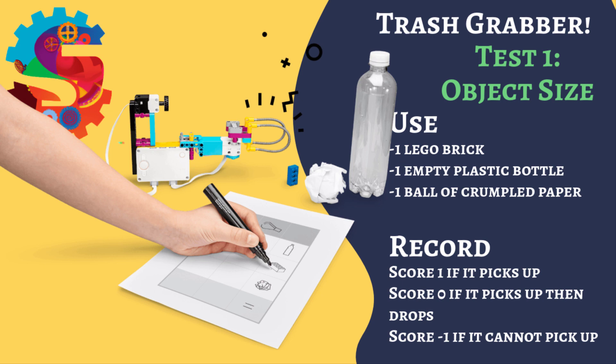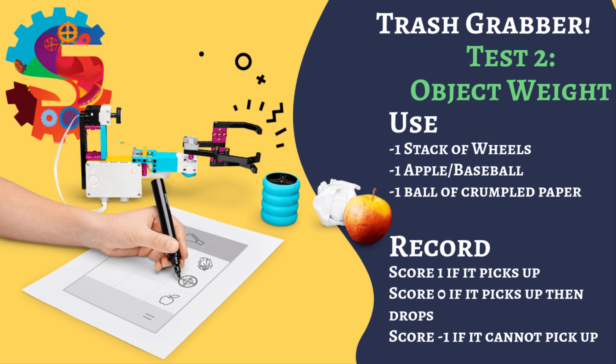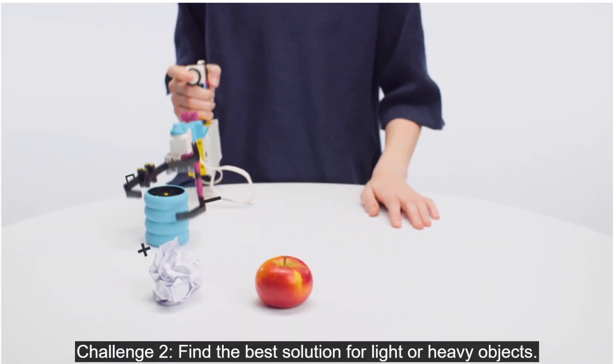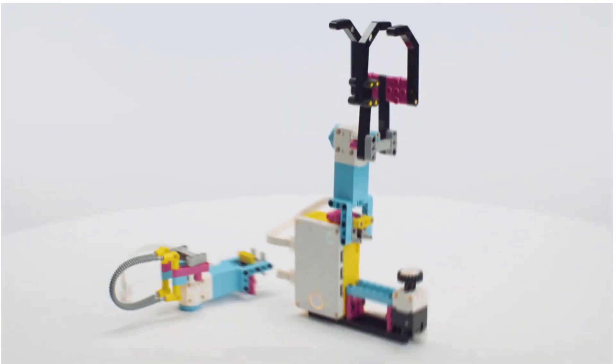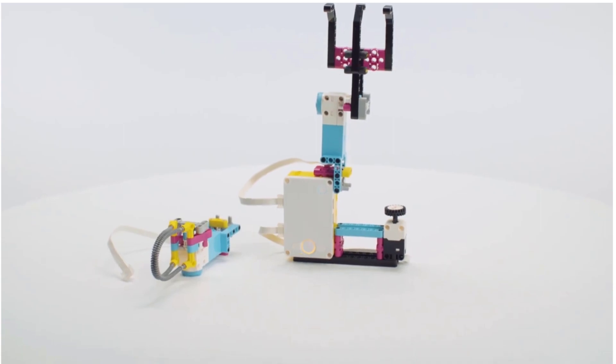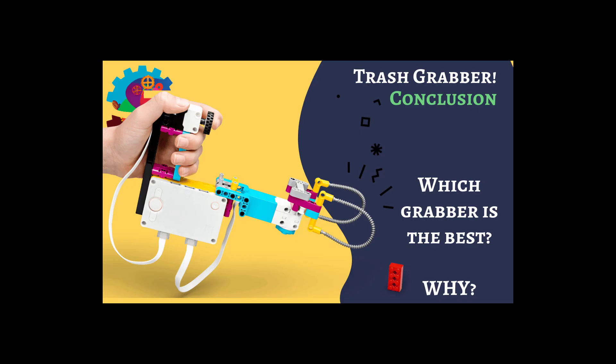For test number two, we're going to be testing object weight. We're going to need to repeat that test, but this time we're going to use three objects that are of similar size but very different weights. We'll use the apple as our heavy object, a ball of crumpled paper as our light object, and the wheels as a medium weight object. So do the same test, scoring it the same way, and which grabber is the best? What's your conclusion? Which grabber is the best for small objects? Which grabber is the best for heavy objects? Go ahead and tell or explain to somebody which grabber you think is better and why. This is your product review.